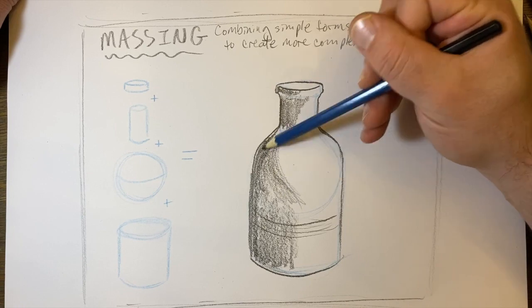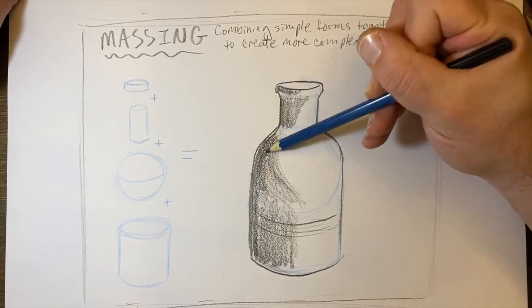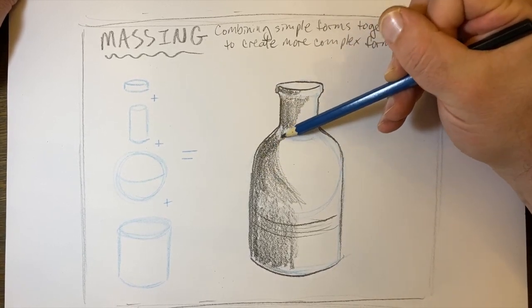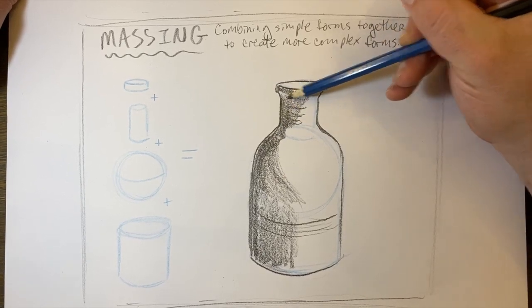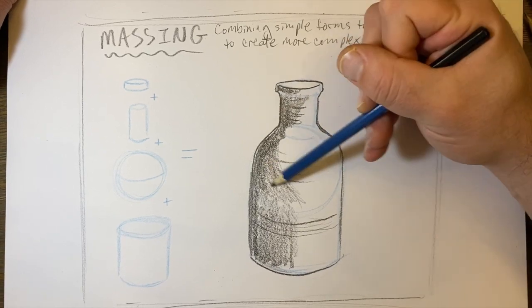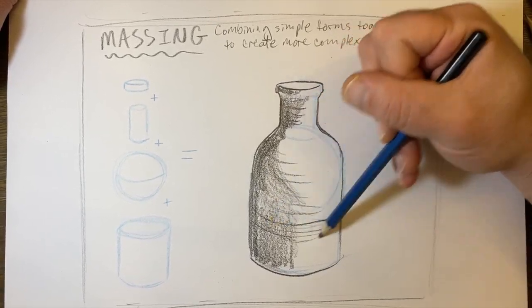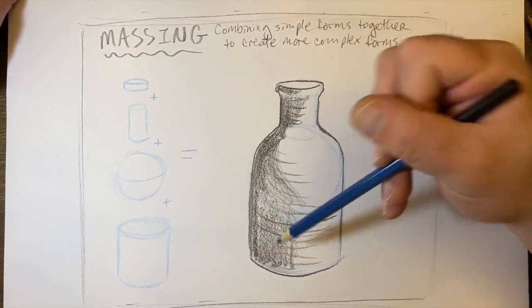So here it is as I'm building up the tones. Notice I'm kind of going back and forth. I'm hatching a little bit. Notice as I hatch I actually bring the lines in a slight curve to sort of mirror the bottom of the cylinder, those ellipses you want to have throughout.